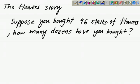Now let's go to this flowers story. Suppose you bought 96 stalks of flowers, how many dozens have you bought? Using your common sense you would have answered 8 dozens, wouldn't you? So how do you get 8 dozens? What formula have you used or you just use common sense?